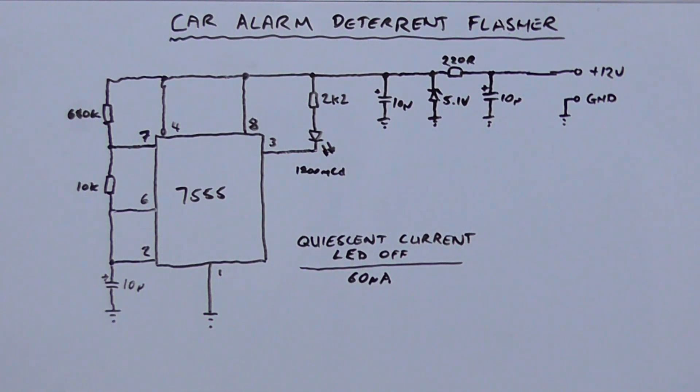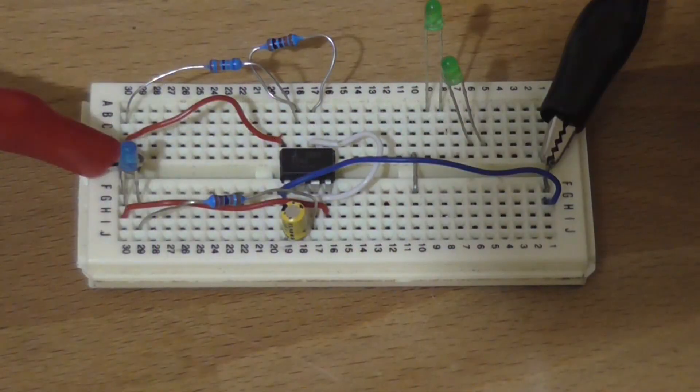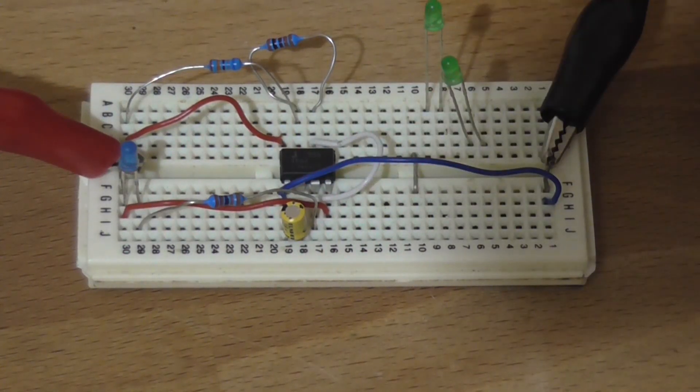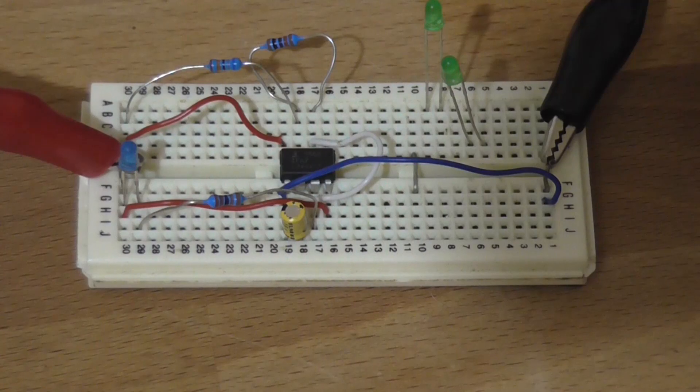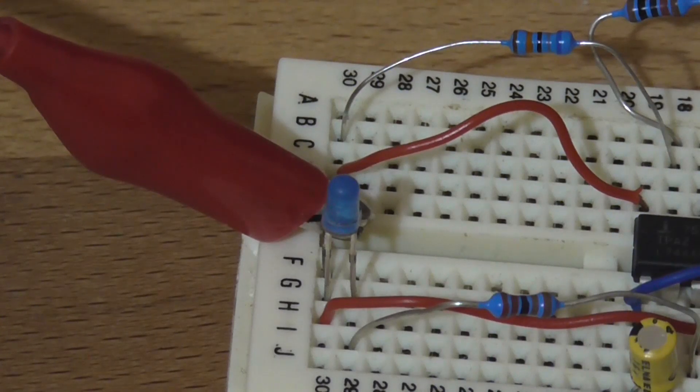So let's have a look at the breadboard implementation. Here's the breadboard implementation as we saw the LED just flashed. Now, ignore these two LEDs up here. They don't do anything. But as we can see, the LED is flashing once roughly every 5 seconds. Isn't that neat?